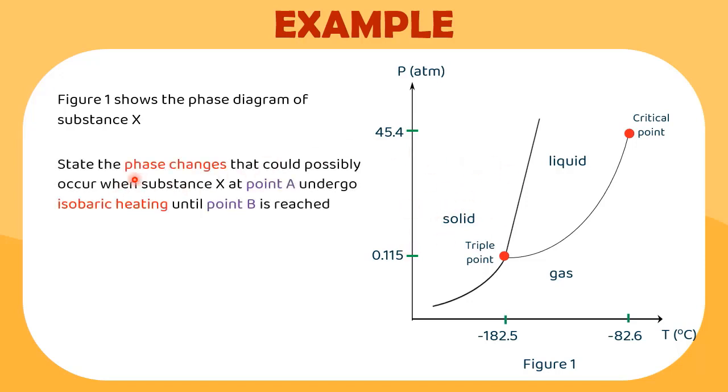Instead it asks for phase changes starting from point A to reach point B, where isobaric heating is applied. The term isobaric here belongs to a condition in which pressure can be measured by using a barometer, is kept constant.